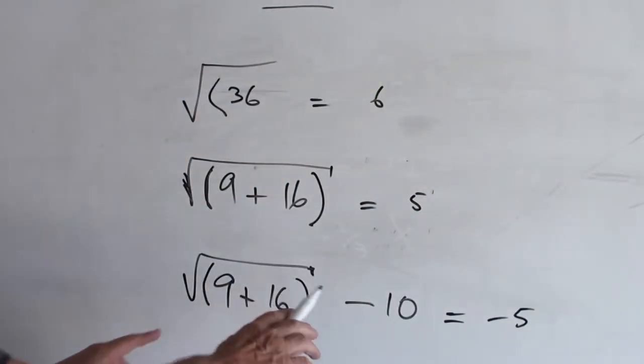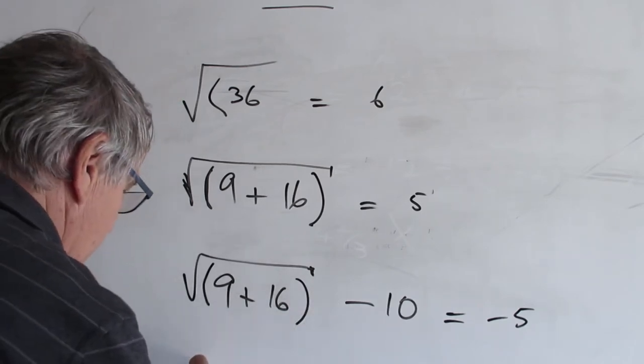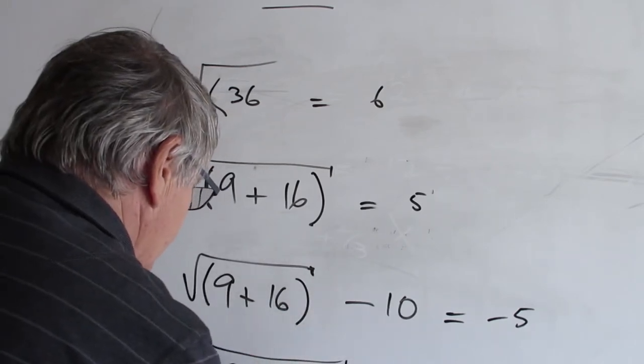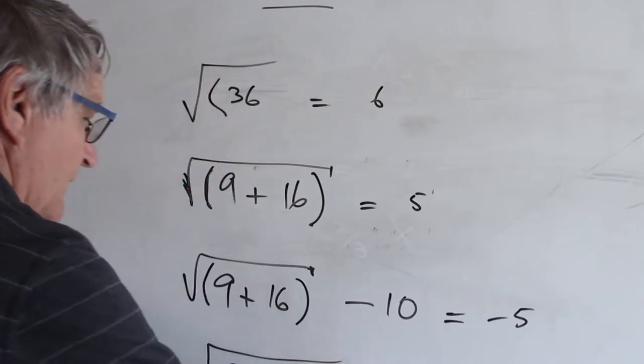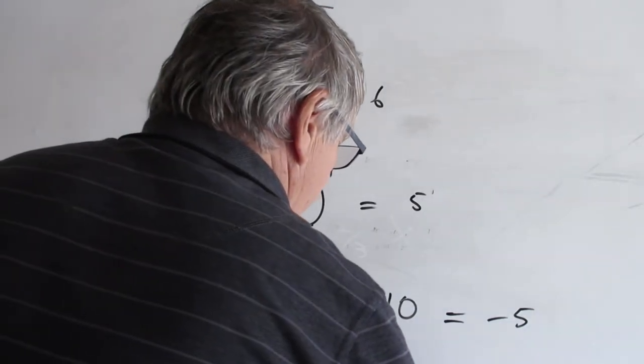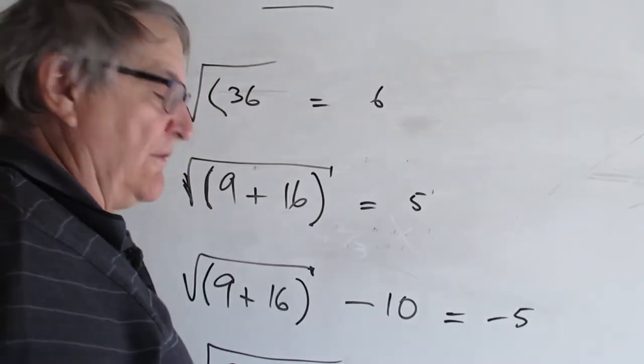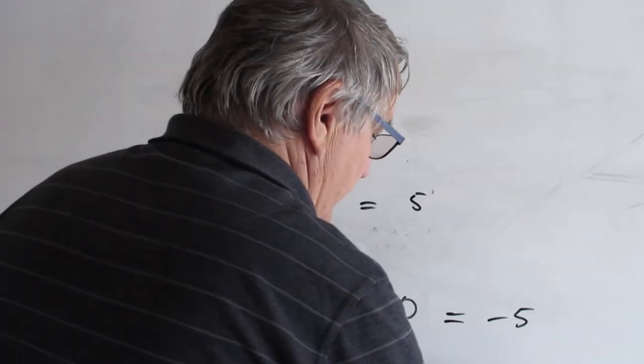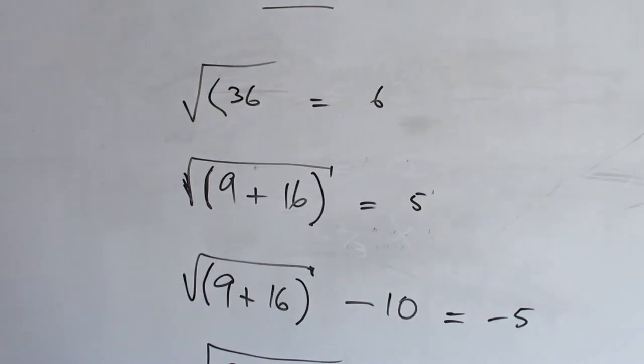If you didn't put in your closed bracket, you'd get the square root of 9 plus 16 minus 10, which would be the square root of 15, which would be, what, 3 point something, 3 point 9 something or other, because it's close to 16. So it's close to 4. Hidden brackets. Very important.